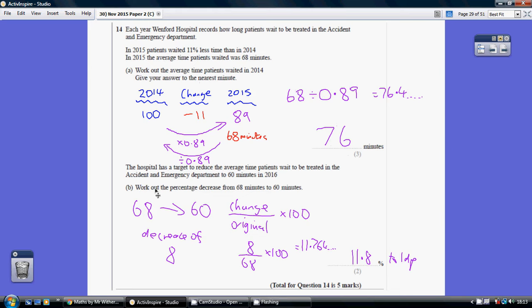Now part B, work out the percentage decrease from 68 minutes to 60. This is a bit more straightforward really.